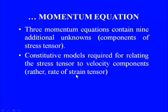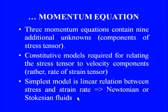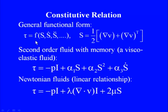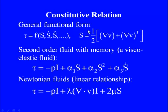The simplest constitutive model is a linear relationship between stress and strain rate, used for Newtonian fluids. For non-Newtonian fluids, the stress-strain relationship is non-linear with different available forms. For a general fluid, stress tensor τ can be a function of strain rate tensor S, where S = ½(∇v + ∇v^T). For a viscoelastic fluid with memory, τ = −pI + α1·S + α2·S² + α3·Ṡ, where α1, α2, α3 are material properties determined empirically.